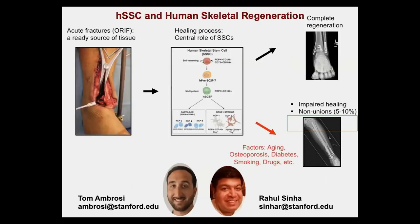This tells us that skeletal stem cells are not only important for the initial formation of the skeleton, but also play a key role in helping bones regenerate. Every single time there's a fracture we see these cells, and if we ablate them with a dose of radiation then the bones cannot heal. With this new skeletal stem cell lens, Tom Ambrosie in my group, in collaboration with Rahul Sinha — an associate scientist at the Institute — started to look at human bone healing.